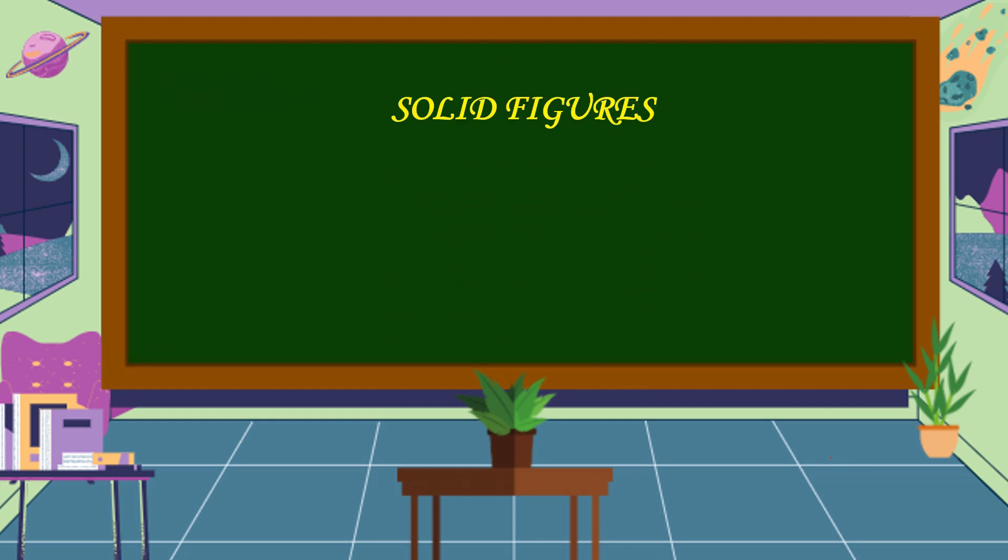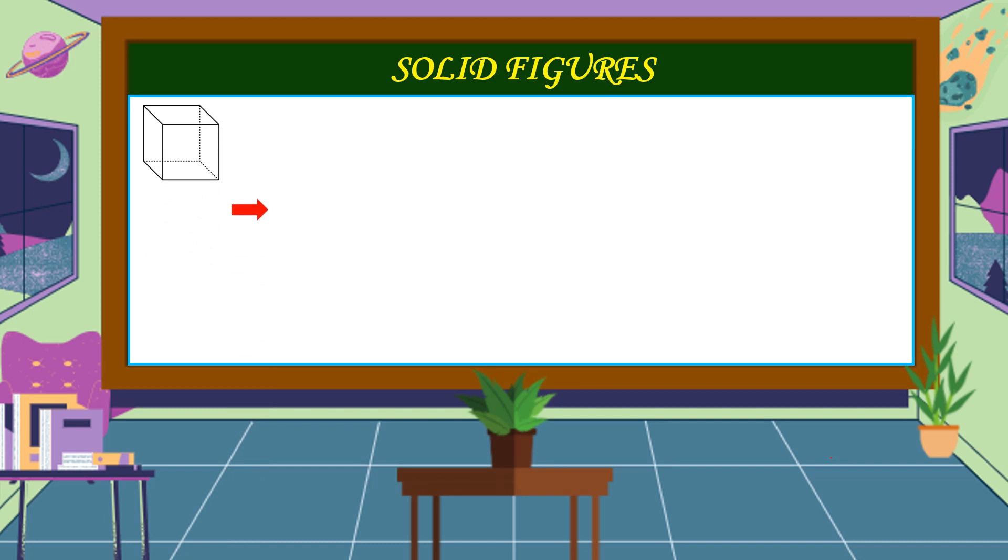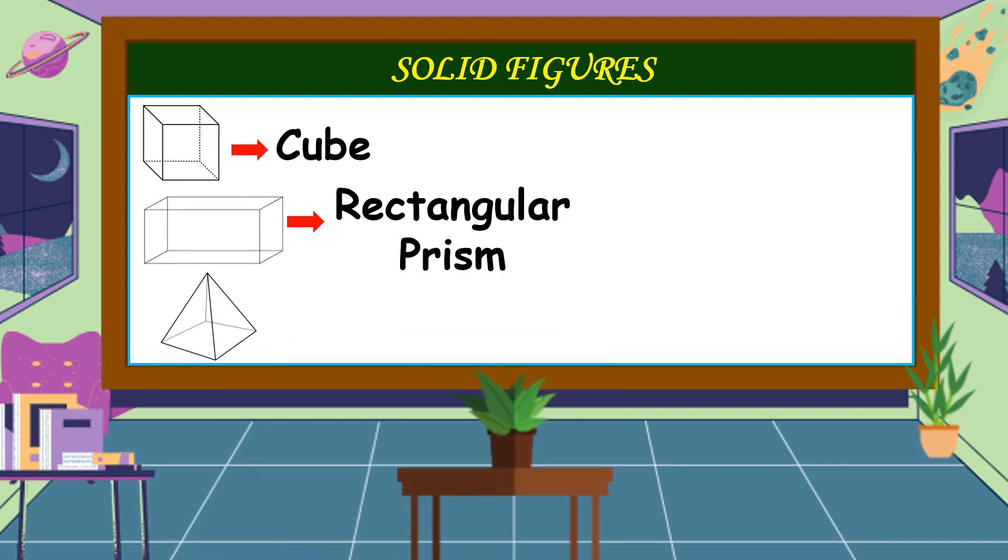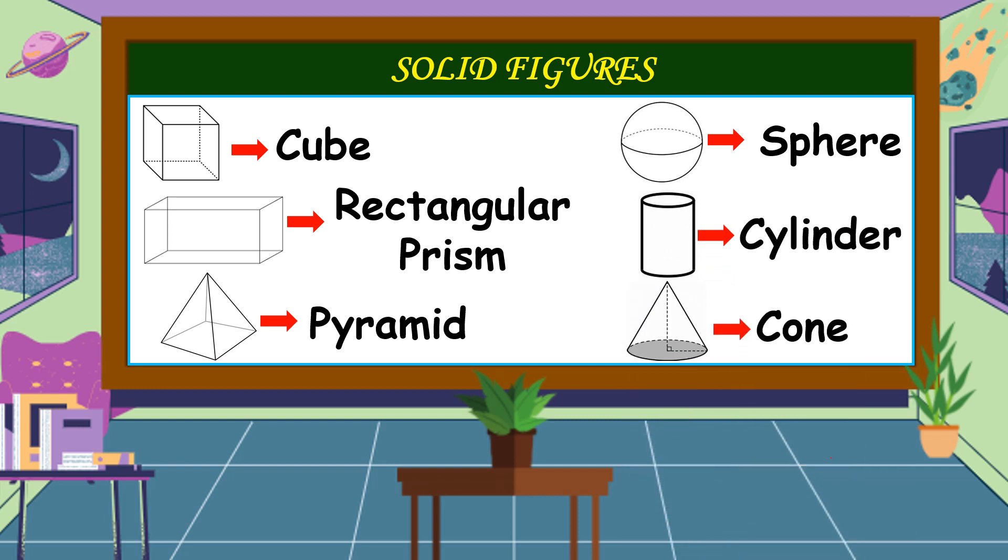These are the solid figures from our previous activity. This is a cube. This is a rectangular prism. This is a pyramid. This is a sphere. This is a cylinder. And lastly, this is a cone.